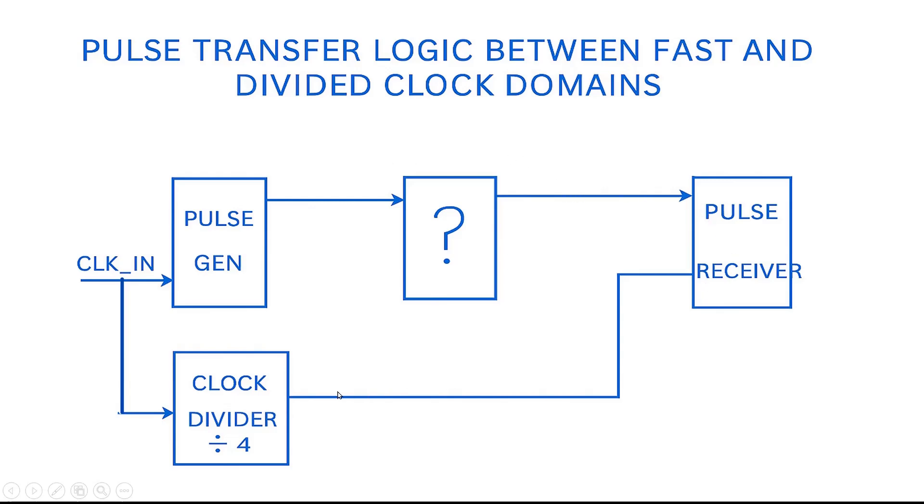Pulse receiver is working at a divide by 4 version of the input clock. So input clock is applied to this clock divider. It is dividing it by 4. So if you consider clock input as 100 megahertz, the output of clock divider will be 25 megahertz. So pulse receiver is working at clock divide by 4.